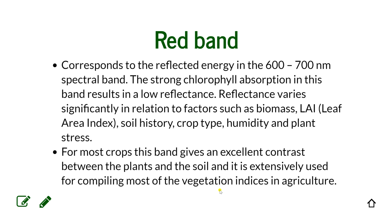Healthy vegetation absorbs blue and red light energy to fuel photosynthesis and create chlorophyll. A plant with more chlorophyll will reflect more near-infrared energy than an unhealthy plant. Analyzing the spectrum of both absorption and reflection — in visible and infrared wavelengths — provides information about plant health and productivity. Near-infrared is sensitive to leaf cellular structure and provides critical data to monitor changes in crop health. Uses include cell property and moisture analysis, crop health and stress assessment, water management, erosion analysis, and even plant counting.